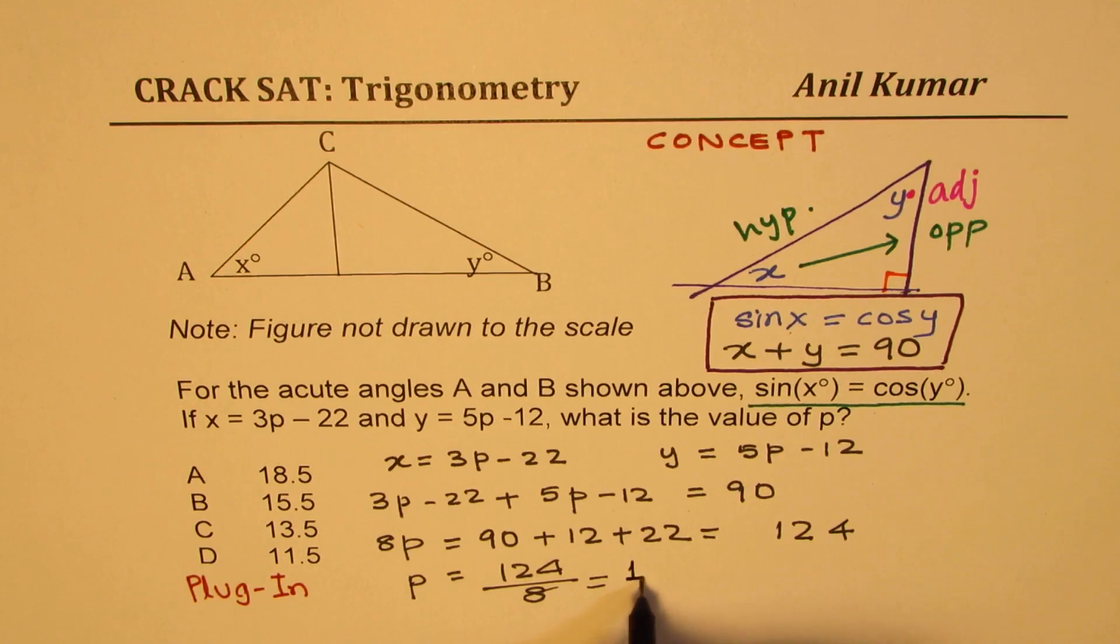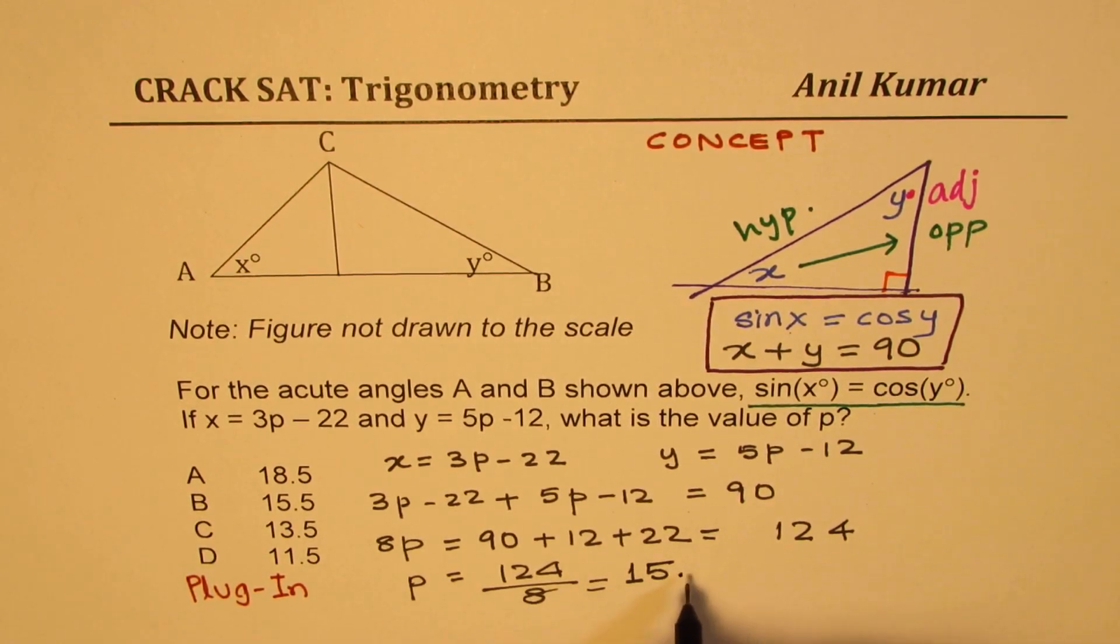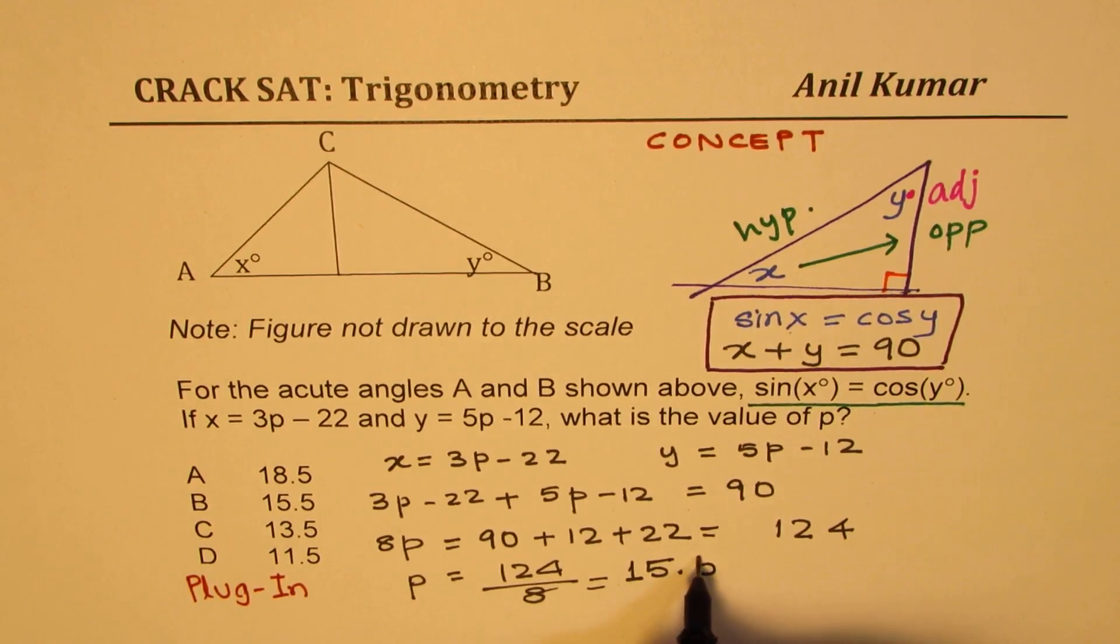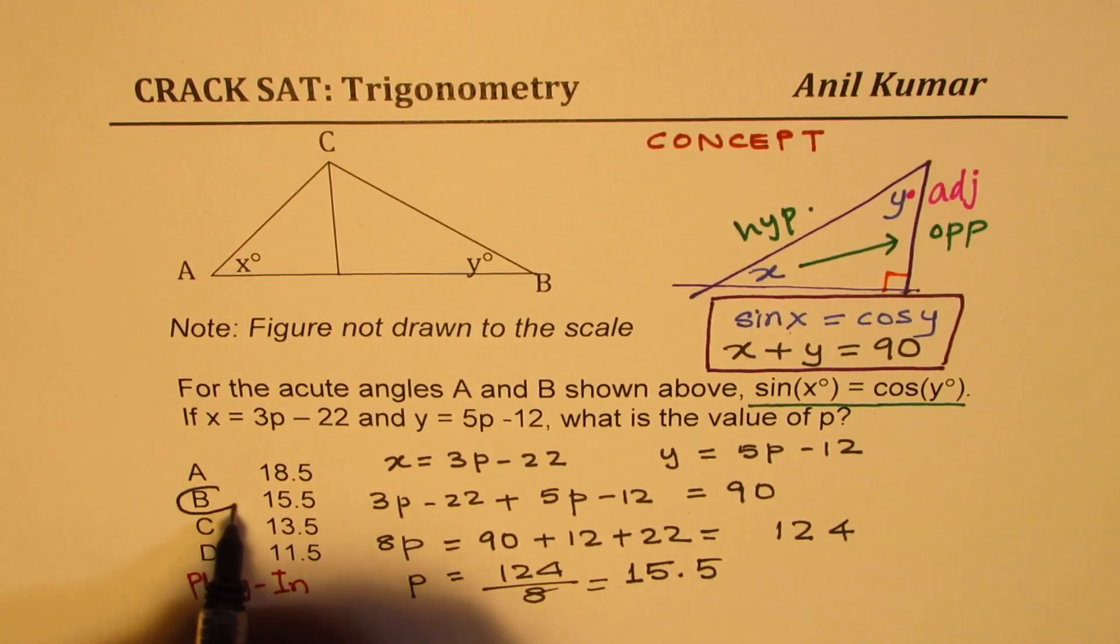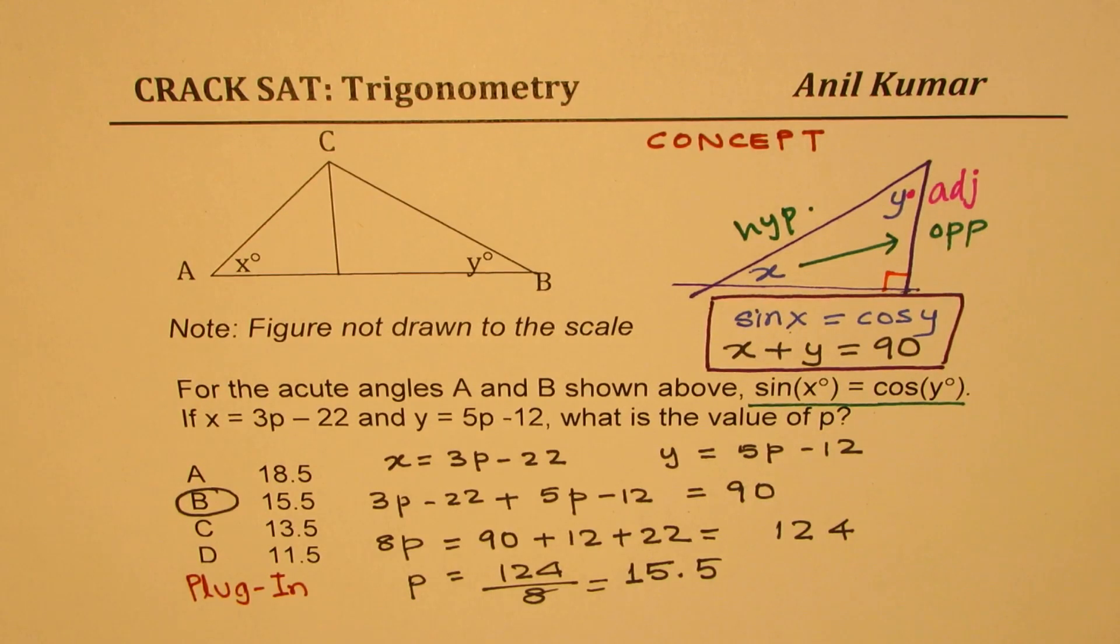8 times 1 is 8, 44. 8 times 5 is 40, 40, 8 times 5 is 40. You get option B as the correct option, perfect.